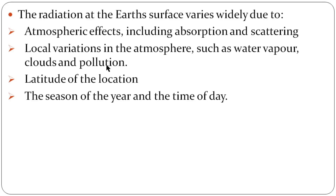The factors affecting solar radiation include: local variations in the atmosphere such as water vapor, clouds, and pollution; the latitude of the location; and the season of the year and the time of the day. I hope I am clear with this video. Thank you, students.